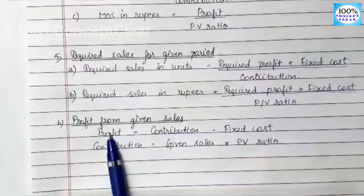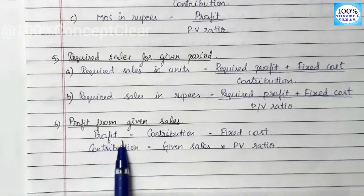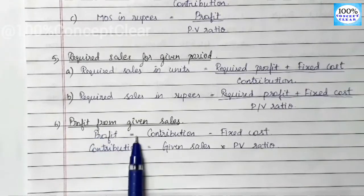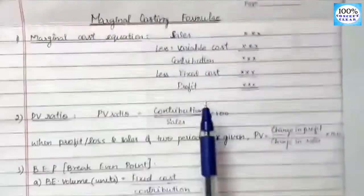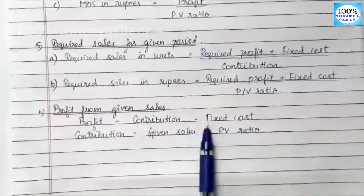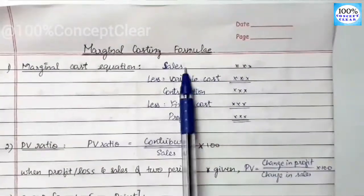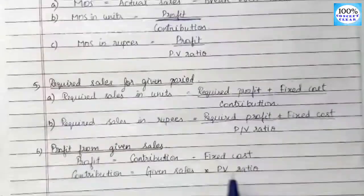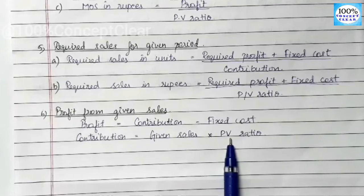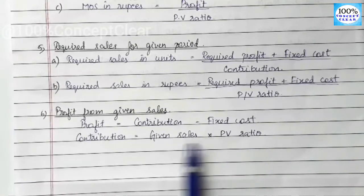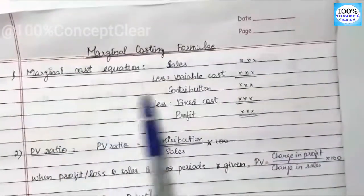Next is profit from given sales. The formula is: Profit equals Contribution minus Fixed Cost. To find Contribution when only sales are given, we use: Contribution equals Sales into PV ratio. So Sales multiplied by PV ratio gives us Contribution, from which we subtract Fixed Cost to get Profit.